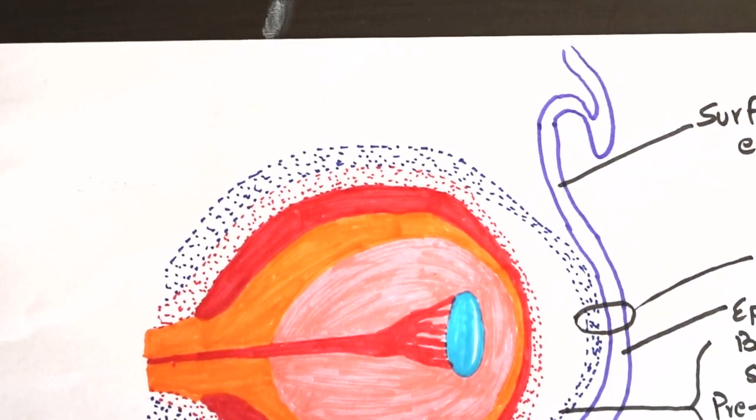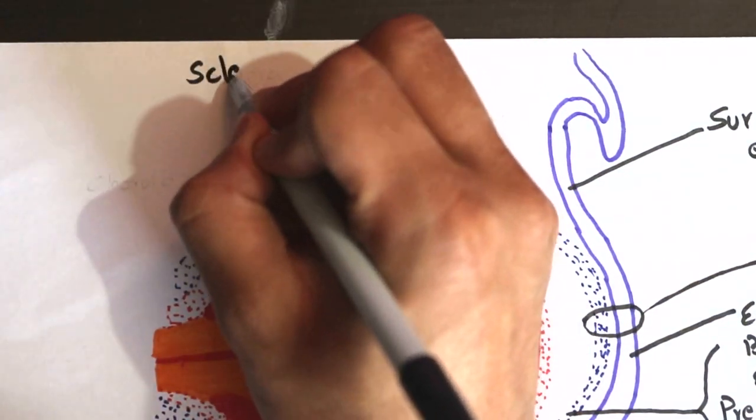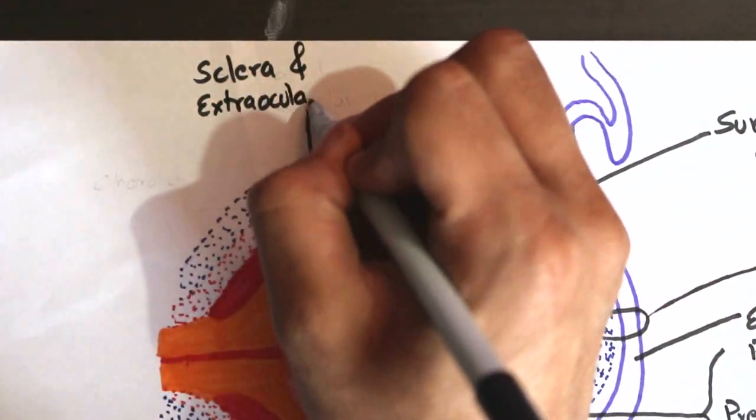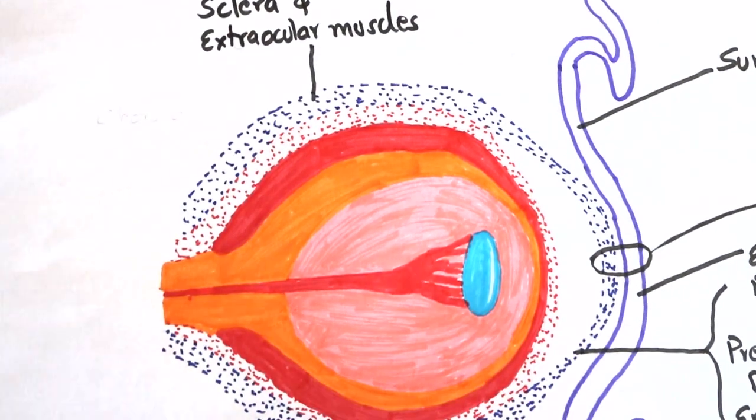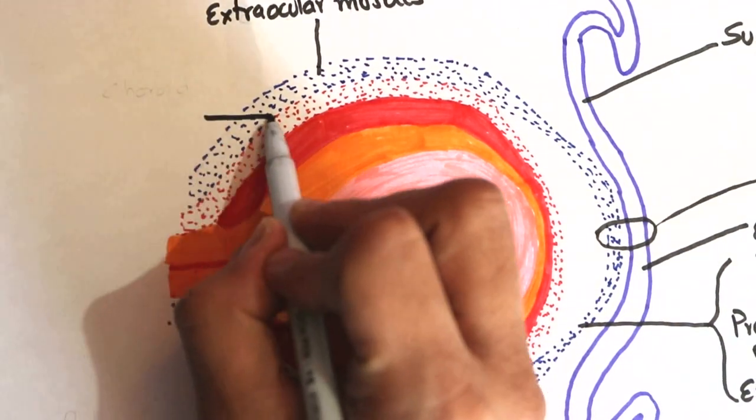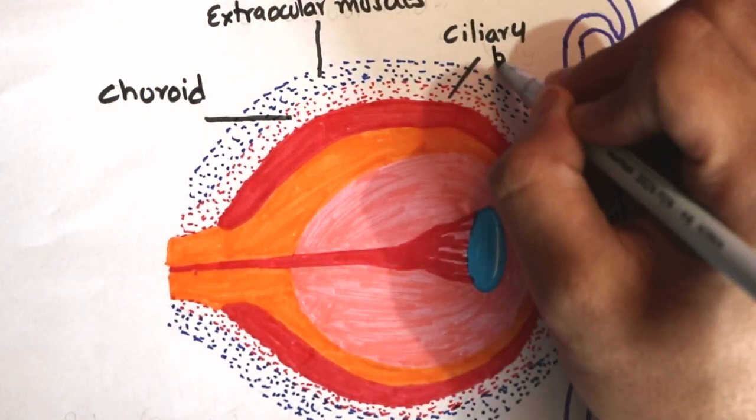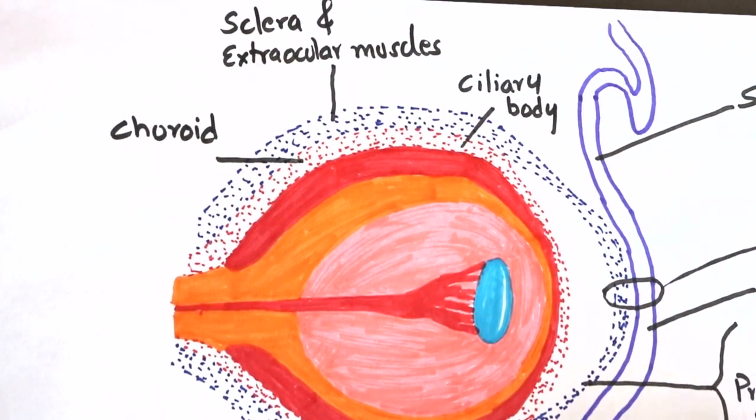Posteriorly, the fibrous mesenchyme forms the sclera and extraocular muscles. The inner vascular mesenchyme forms the choroid and ciliary body anteriorly.